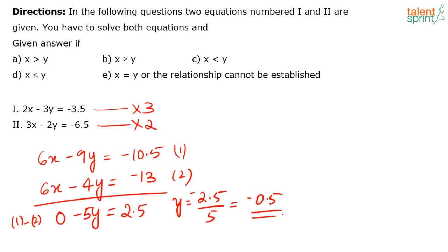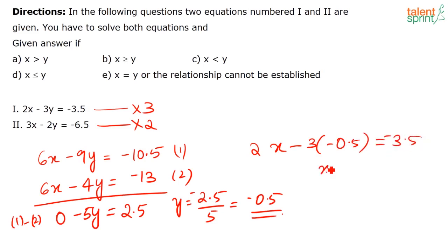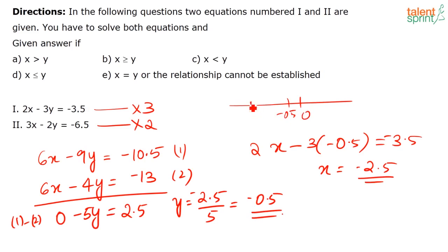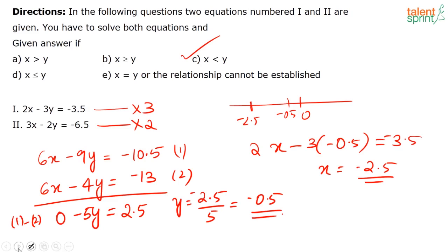Substituting y = −0.5 into 2x − 3(−0.5) = −3.5 gives x = −2.5. On the number line, −0.5 is greater than −2.5, so y is greater than x. The answer for this question is option C — y is greater than x, or x is less than y.